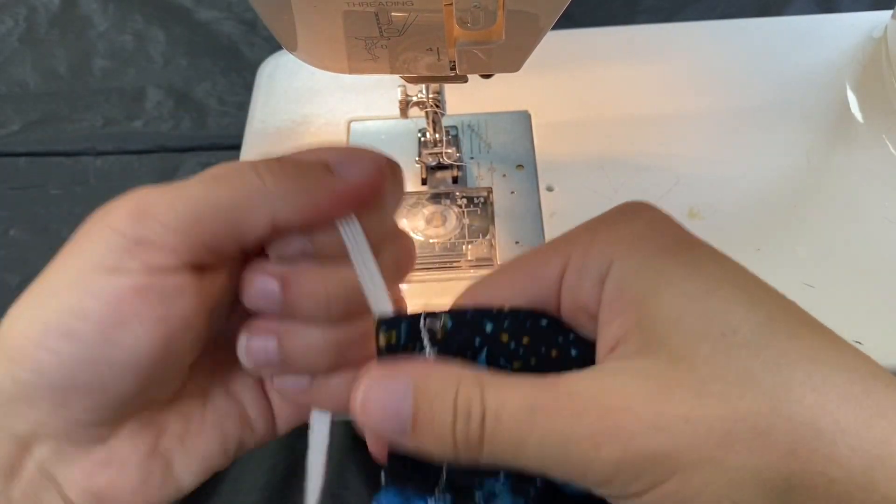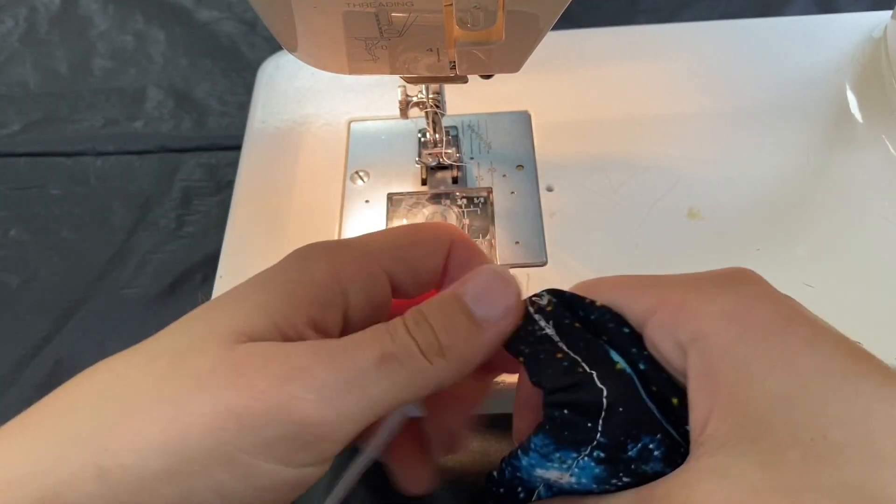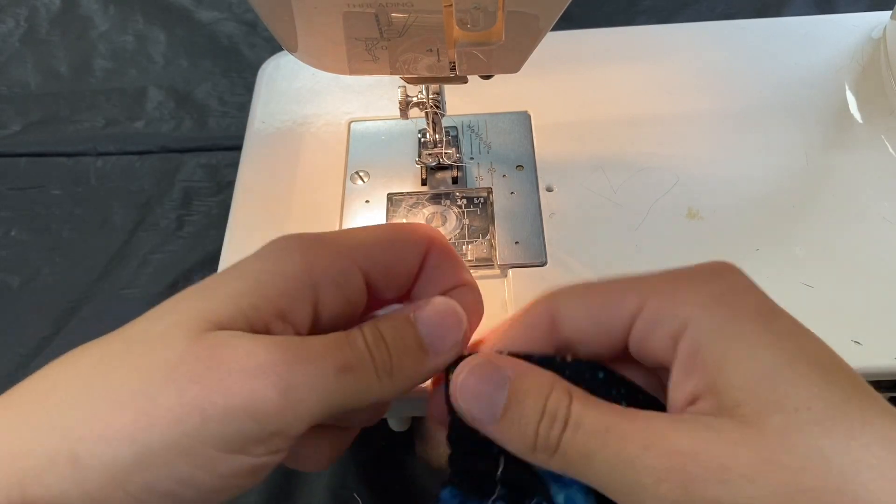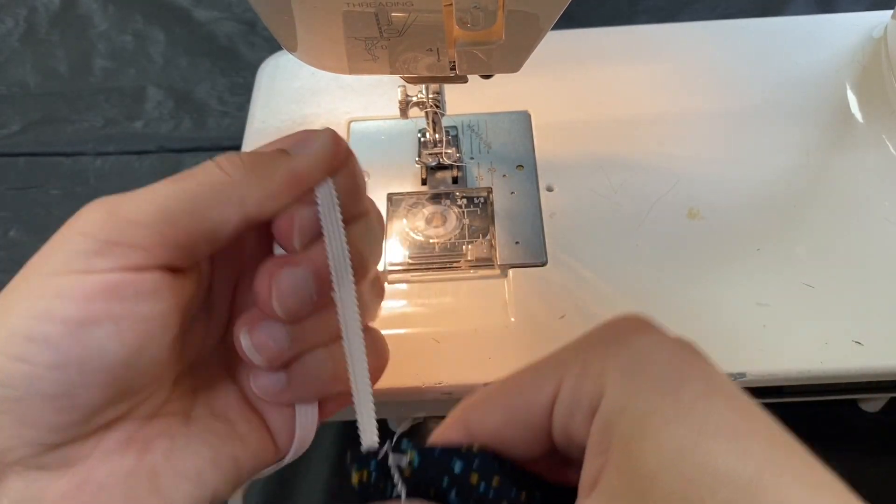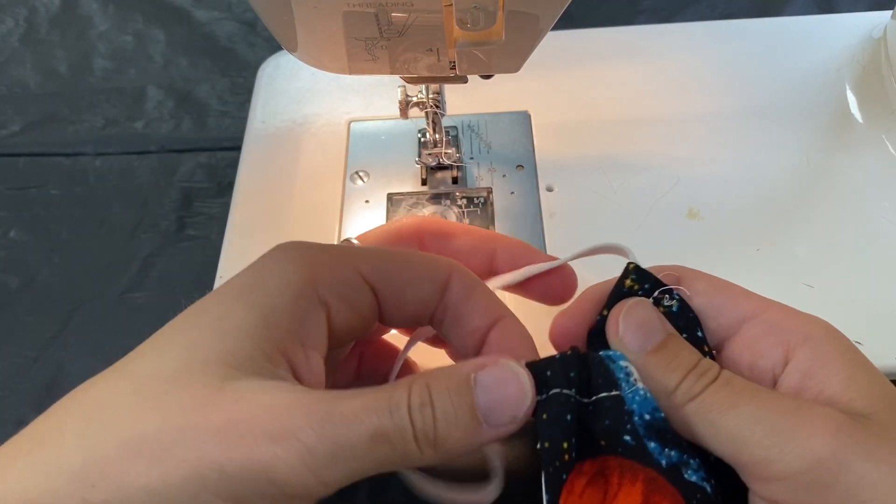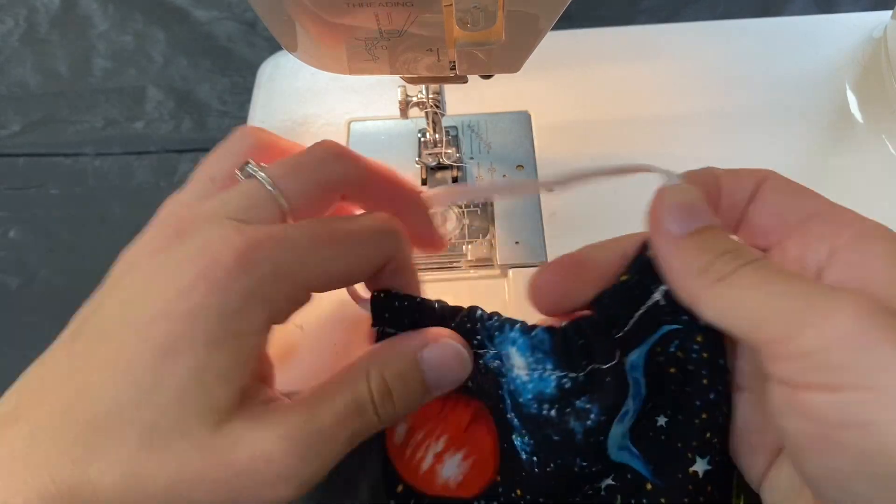Here's how I hide the ugly bit inside my fabric tube. Just keep pulling on this side and slowly it'll get pulled in. There we go.